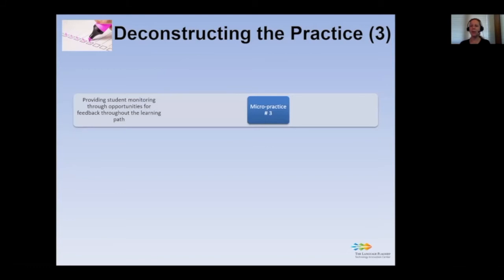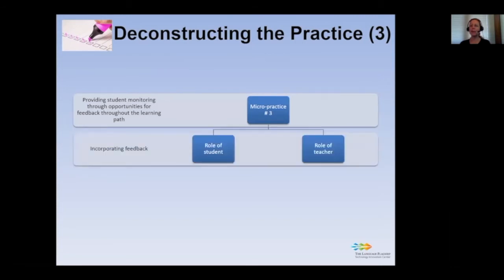The third micro practice consists in providing student monitoring through opportunities for feedback throughout the learning path. Feedback — both confirmative and corrective — is a crucial ingredient in the acquisition of a second language. Incorporating feedback into the learning path, rather than adding it as a separate component or at the end when it is of limited value, provides a sense of continuity, integration, and presence. Feedback should be a regular component of the blended path.